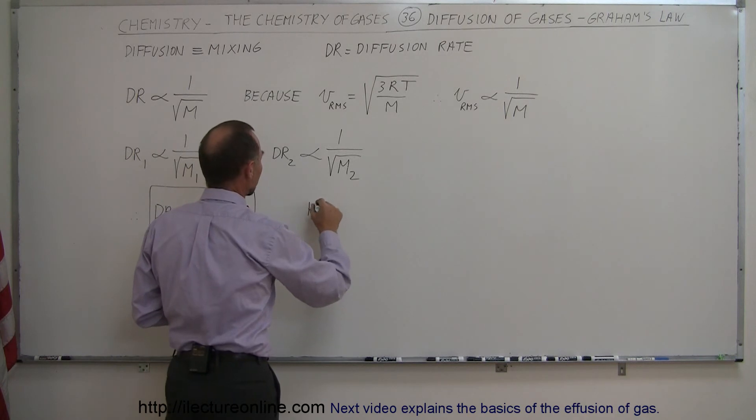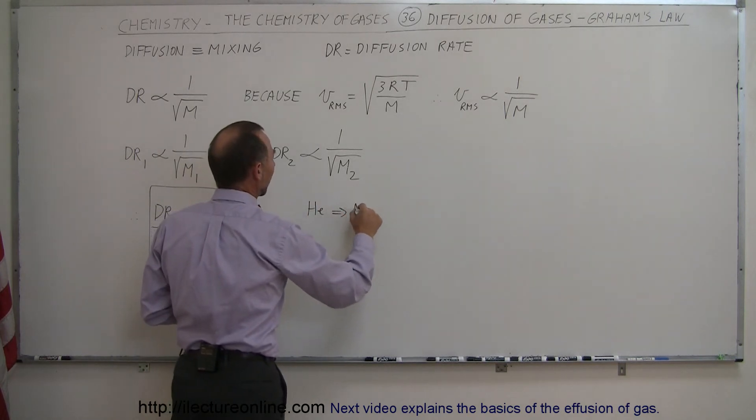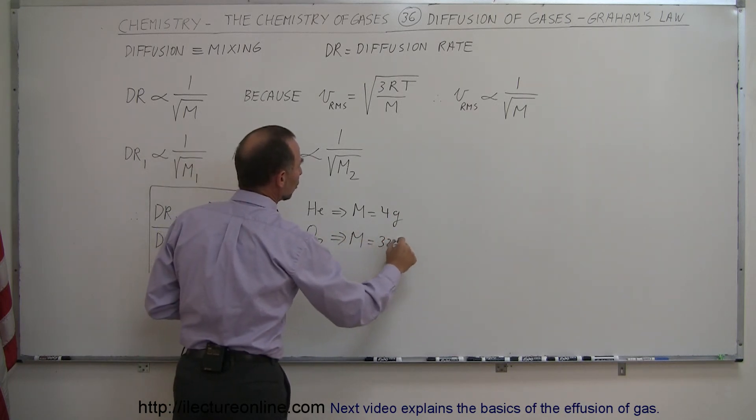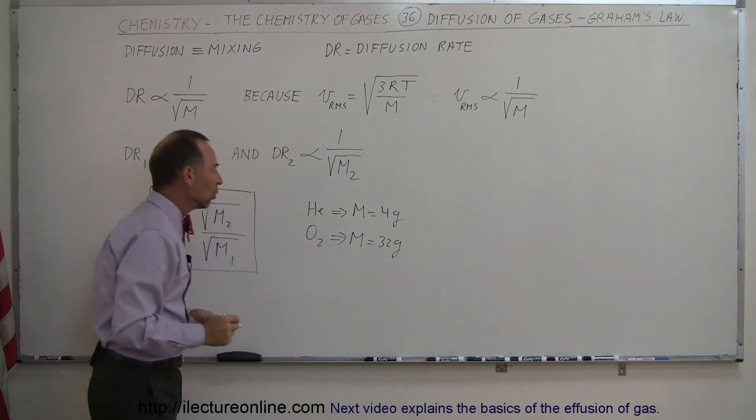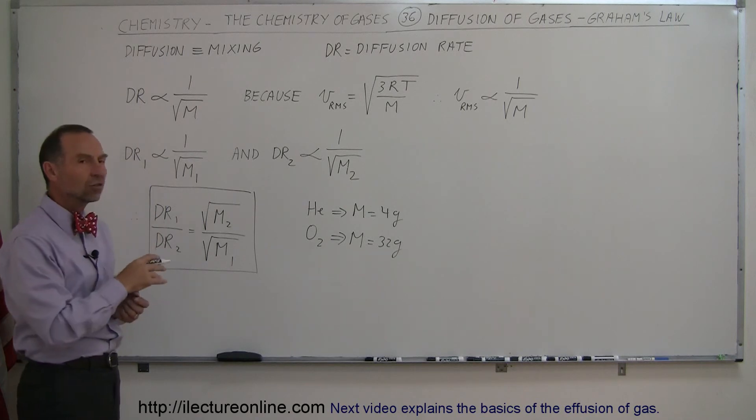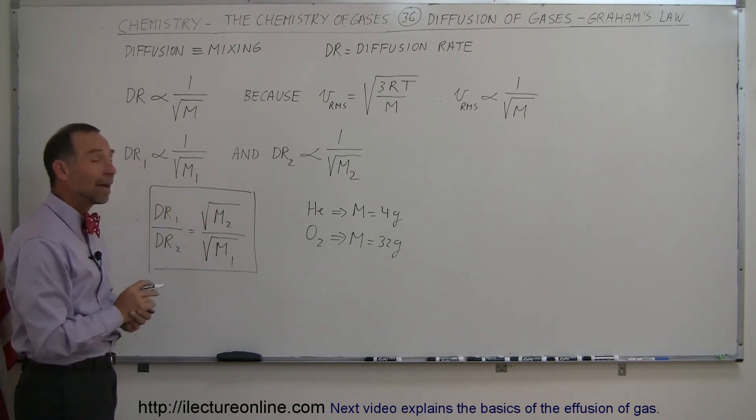Let's take helium, which has a molar mass equal to four grams, and let's take oxygen, which has the molar mass equal to 32 grams. So, that would mean that the diffusion rate of helium compared to oxygen can be calculated using their masses.